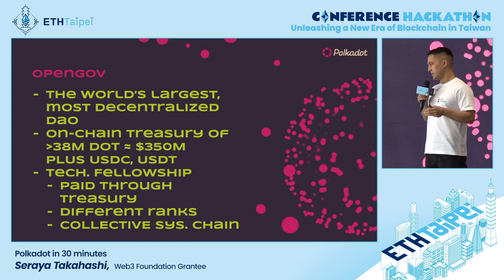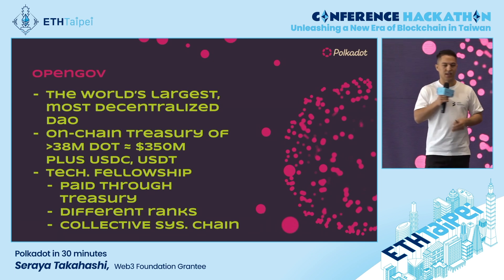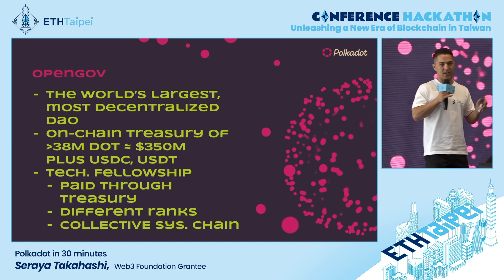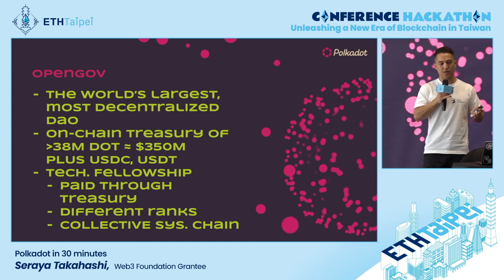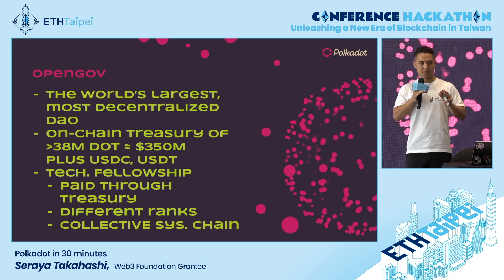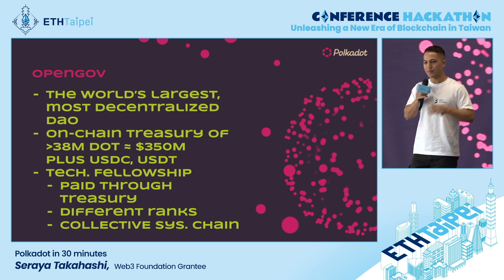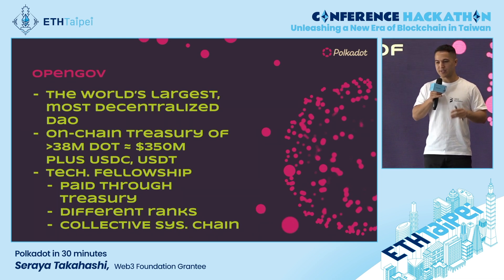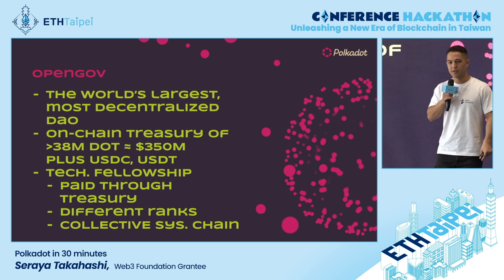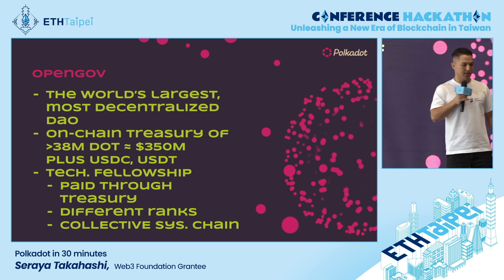We also have system chains or common-good chains. Other system chains include the Asset Hub, which is more concerned with hosting and bridging assets between different networks, and also the Bridge Hub.